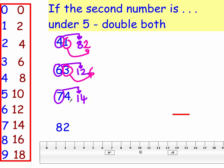Double 7 is 14, double 8 is 8, 148. Double 8 is 16, double 2 is 4, 164.